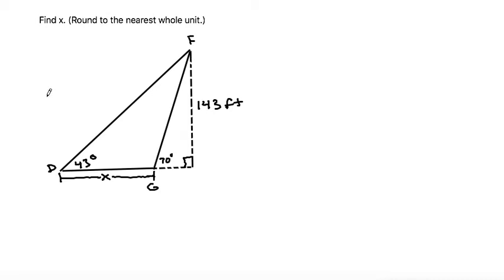So let's think about, there could be different ways to find different sides and different angles, but since x is part of this non-dotted triangle, I'm going to try to find some parts of that non-dotted triangle.